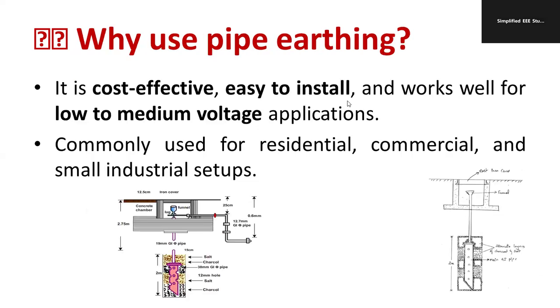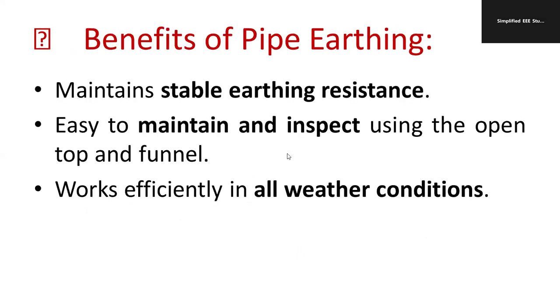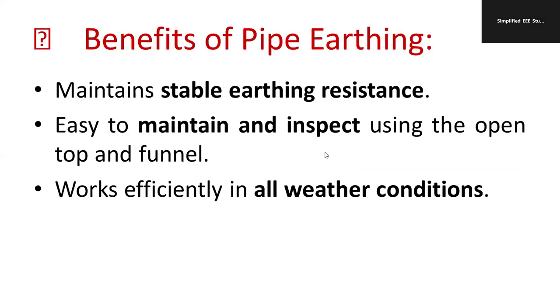It is cost effective and easy to install and works well for low and medium voltage applications. For high voltage installation use plate earthing; for low voltage use pipe or rod earthing. Commonly used for residential, commercial, and small industrial setups. The advantages are stable earthing resistance, easy to maintain and inspect, and works efficiently in all weather conditions. The drawback is it's suitable only for low voltage installation. For high voltage, pipe is not sufficient.